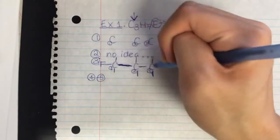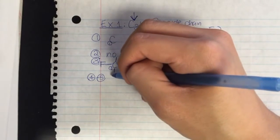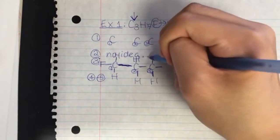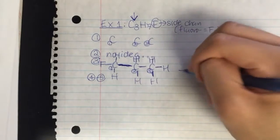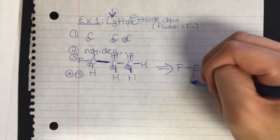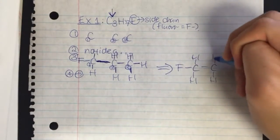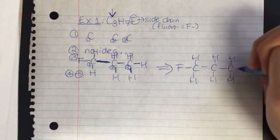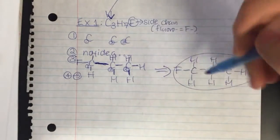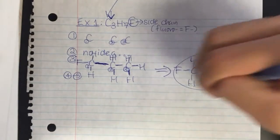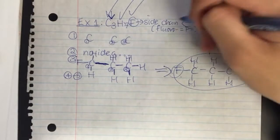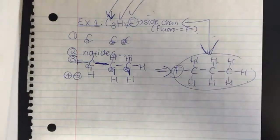Finally in step 5, now that I've gotten four bonds maximum around each C, I put H's in all the empty spots. This is the structural formula I get for C3H7F. I can check it: I have three C's, seven H's, and one F — that definitely matches the chemical formula. This is the structural formula for this chemical formula.